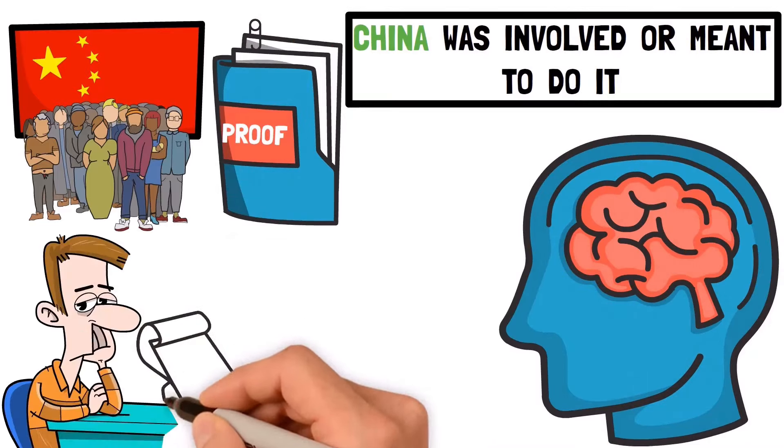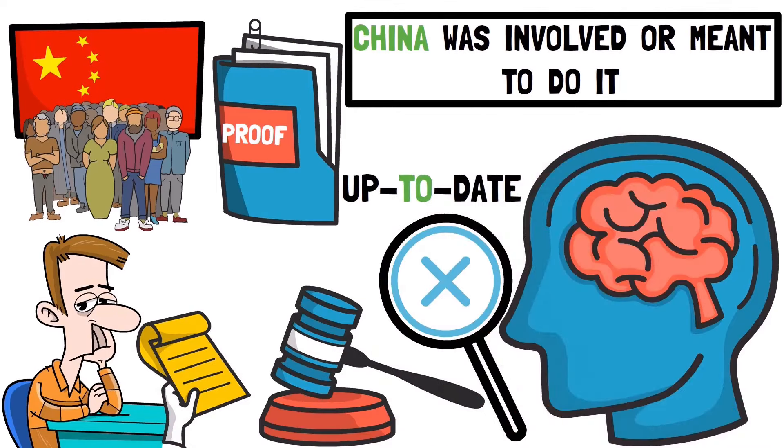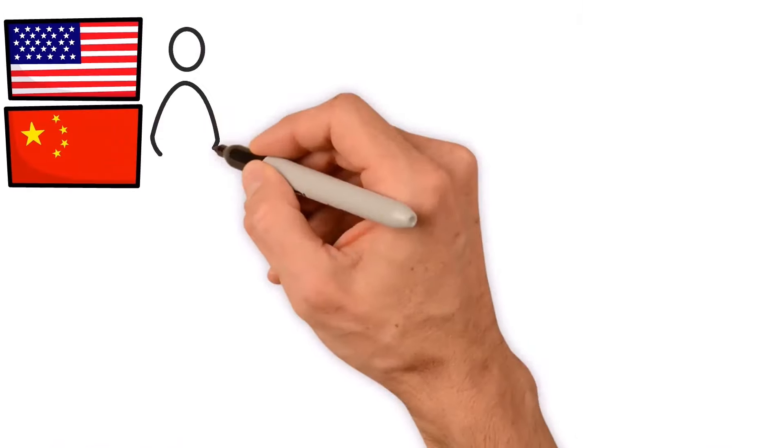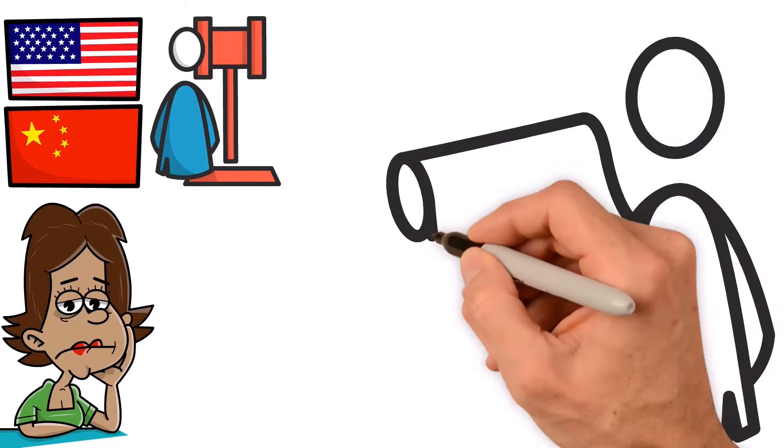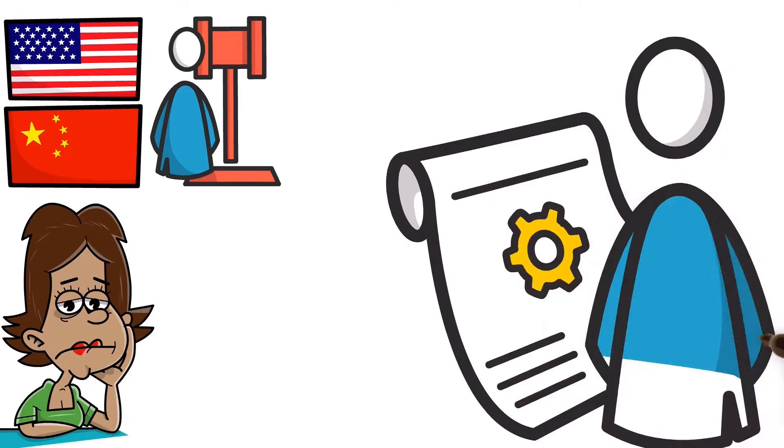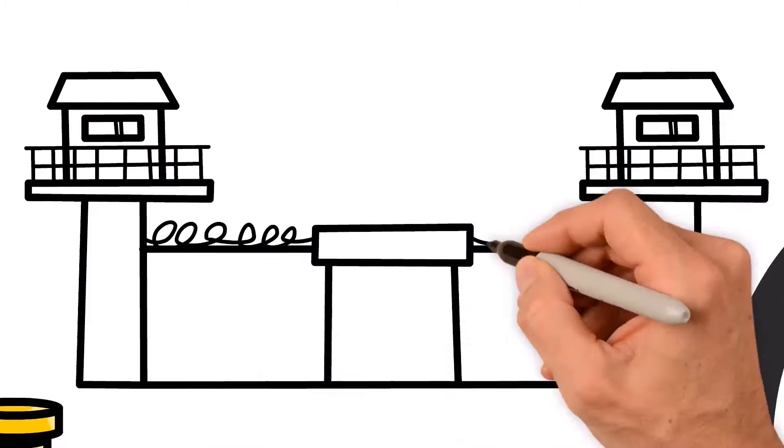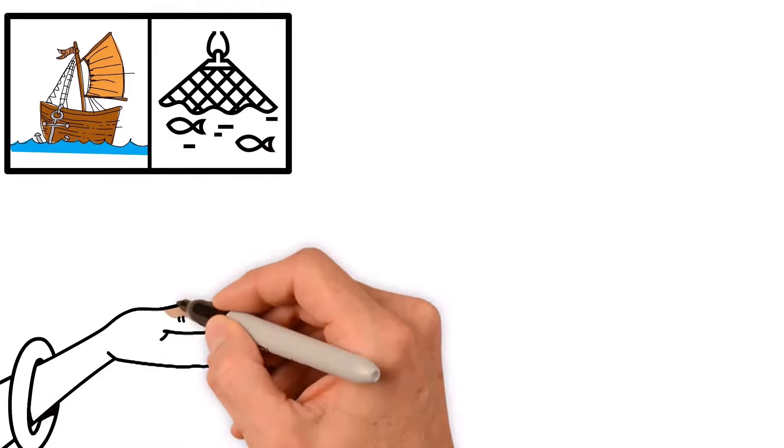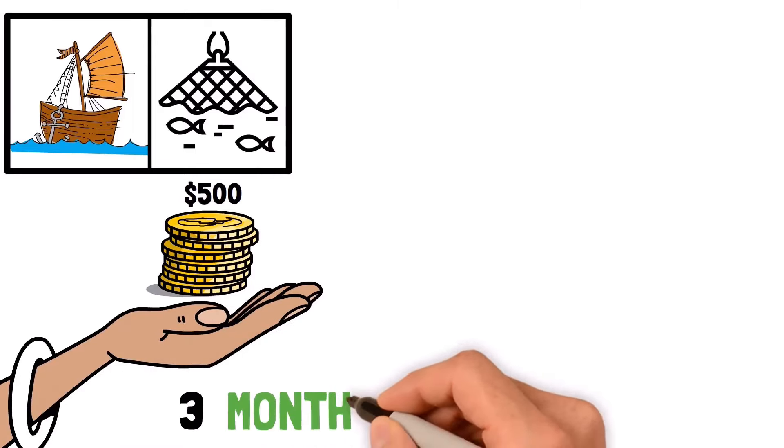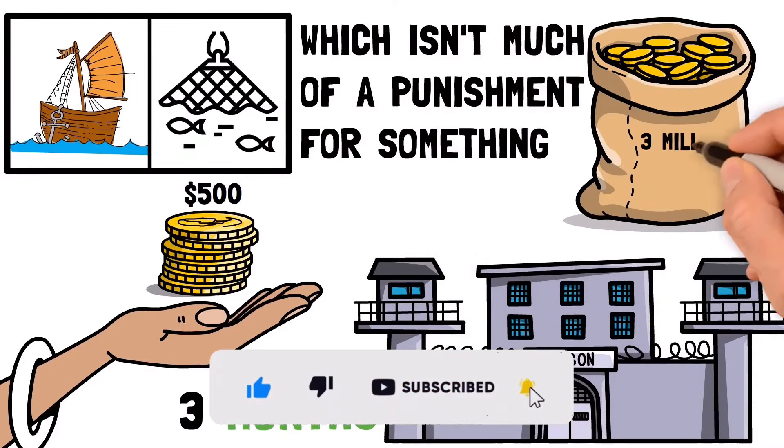Another issue with these cables is that the rules for them in international law are not very clear or up to date. The US and China tried to make their own rules but they weren't very good. The most recent American law about these cables is from way back in 1888. If someone breaks a cable they could get fined $5,000 and go to jail for up to two years. If they mess up with anchors or fishing nets they might only get a $500 fine and three months in jail, which isn't much of a punishment for something that can cost up to $3 million to fix.